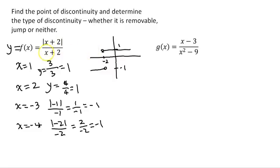After negative 2, the y value will be 1, and before negative 2, the value of y will be negative 1. At x equals negative 2 exactly, the denominator becomes 0, so f of negative 2 is undefined. Since the function is undefined, this is the point of discontinuity at x equals negative 2. This is a jump discontinuity.